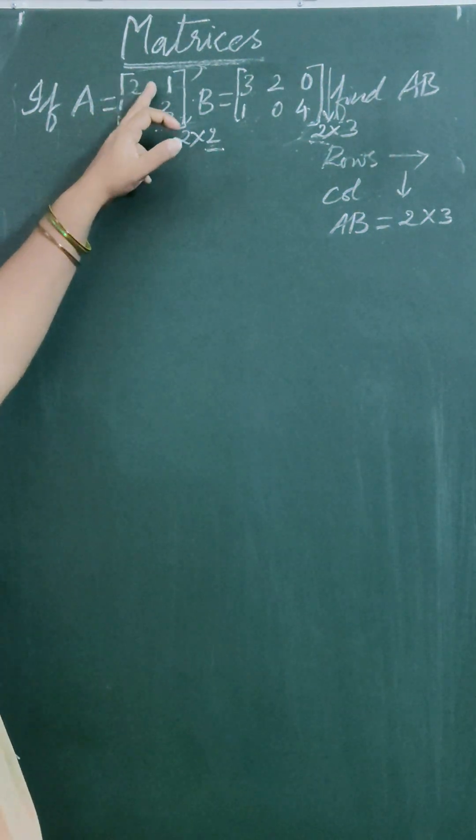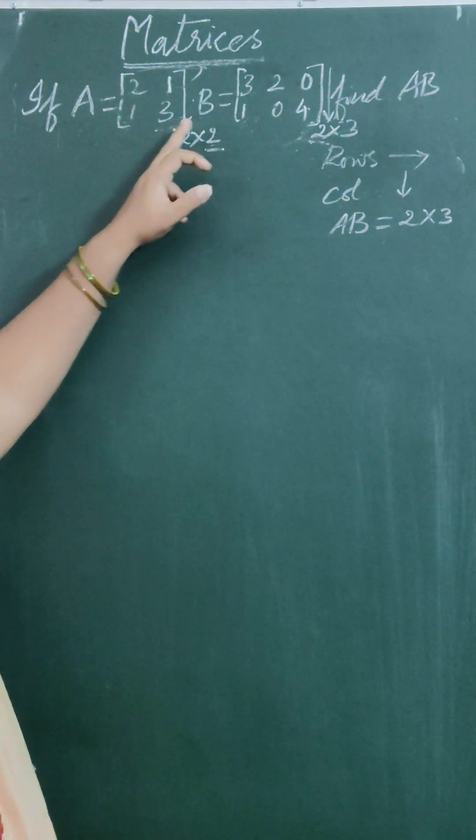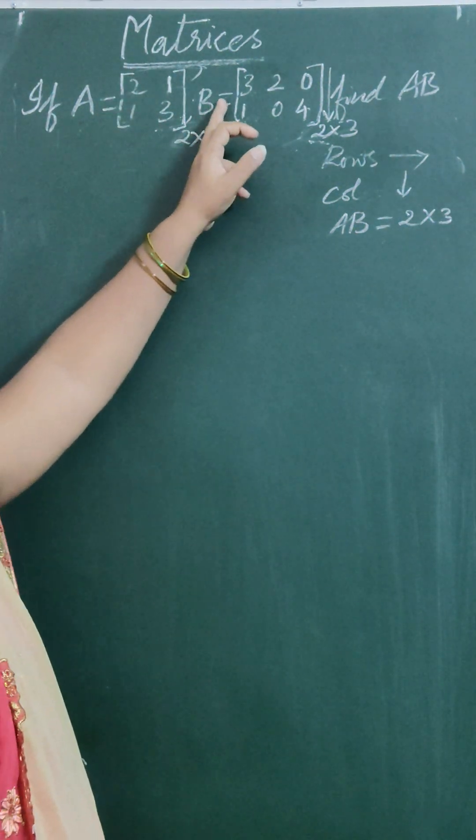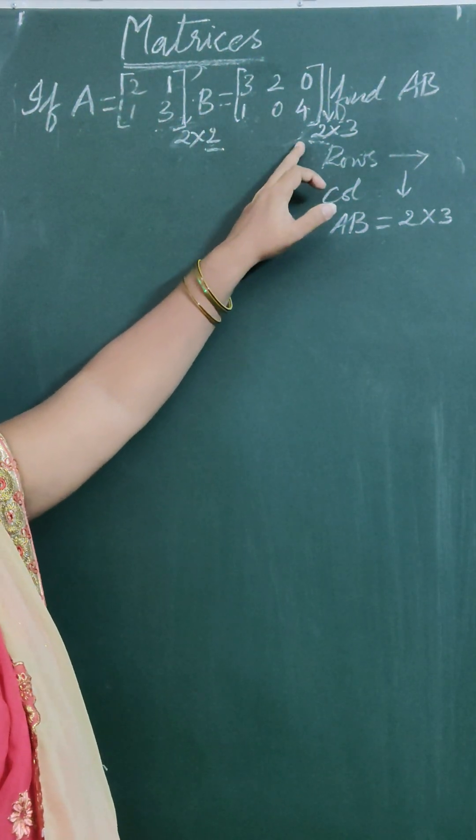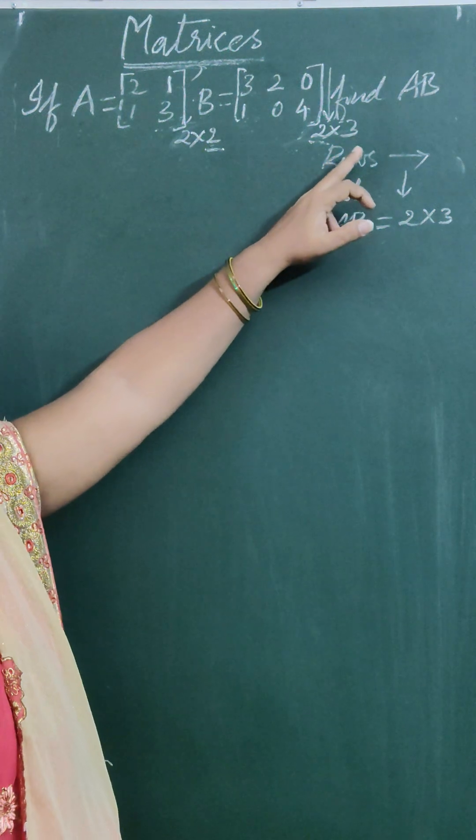If A equals 2, 1, 1, 3 and B equals 3, 2, 0, 1, 0, 4, find A times B.